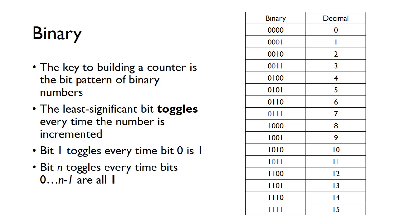The key to building a counter is the bit pattern of binary numbers. This table shows the values from 0 to 15, both in binary and decimal. We know from binary that the least significant bit toggles every time — so bit 0 goes 0, 1, 0, 1, 0, 1 and so on, toggling on every clock.